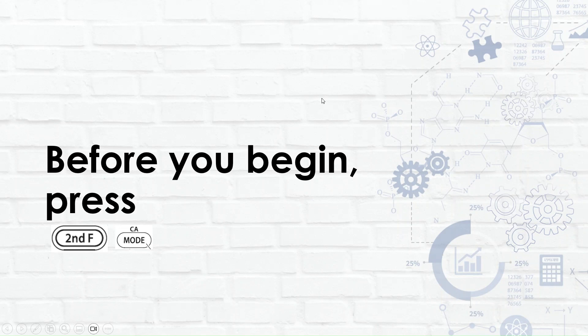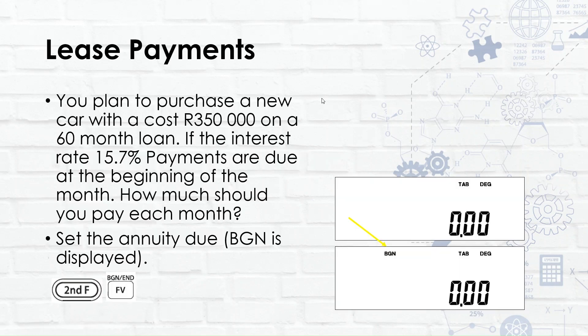Before the second example, press second function and mode to clear everything. This example covers lease payments: you plan to purchase a car costing 350,000 rand on a 60-month note at 15.7% interest, with payments due at the beginning of the month. How much should you pay each month?